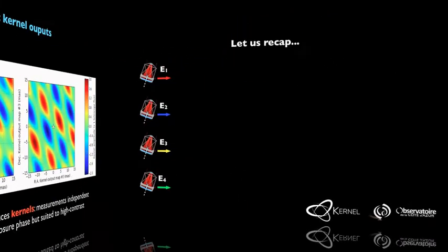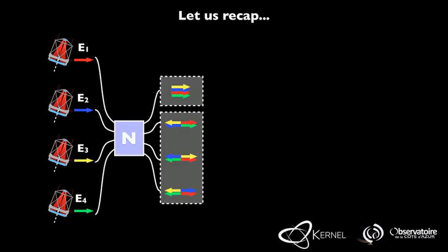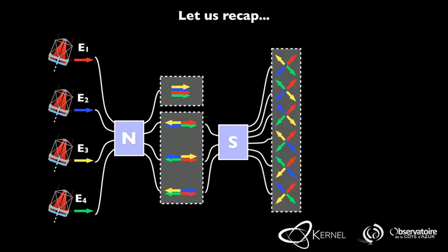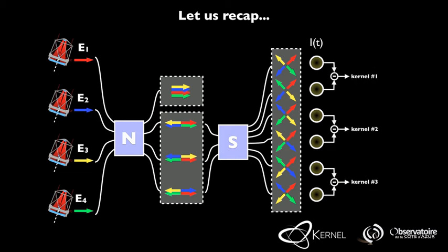Let us review how the proposed architecture operates. Our four fields are recombined in a four beam nuller. The dark outputs of this all-in-one nuller are remixed in a second stage that produces six distinct outputs whose signals are simultaneously recorded and timestamped by a detector. At any instant, the difference between the signals of consecutive outputs produces a kernel, a high contrast observable that is insensitive to instrumental perturbations.